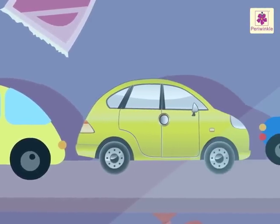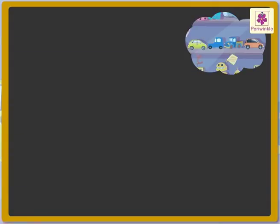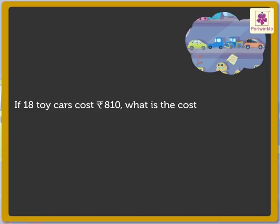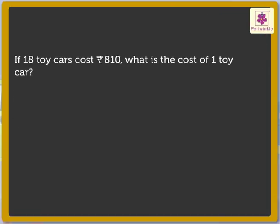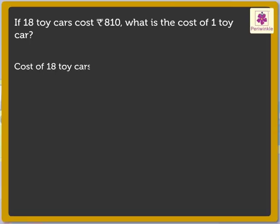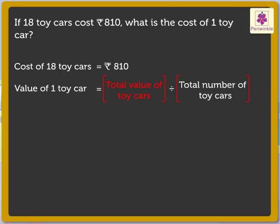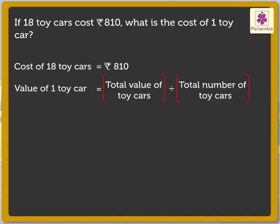Look at the toy cars. If 18 toy cars cost 810 rupees, what is the cost of one toy car? Cost of 18 toy cars is equal to 810 rupees. Now, to get the value of one toy car, we have to divide the total value of toy cars with the total number of toy cars.